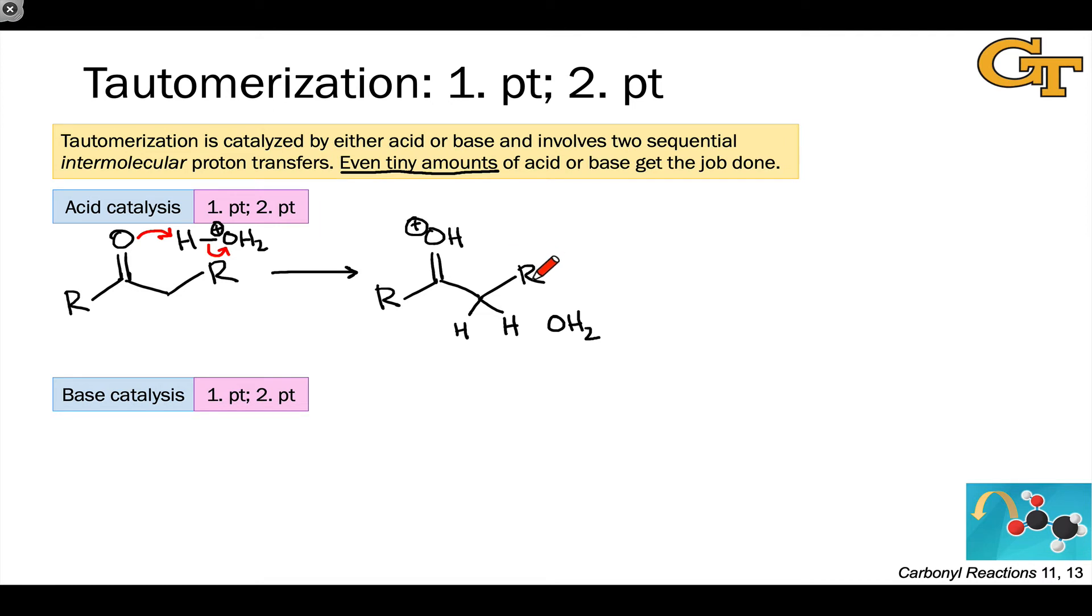And water is now perfectly poised to remove the proton from the alpha position. So notice, in the acid-catalyzed mechanism, and in fact the same is going to be true in the base-catalyzed mechanism, a proton transfer that we tried to do in one step really requires two steps to do. First, a proton goes on from the acid catalyst, and then a proton comes off as a result of deprotonation by the basic catalyst. This second step does two things.